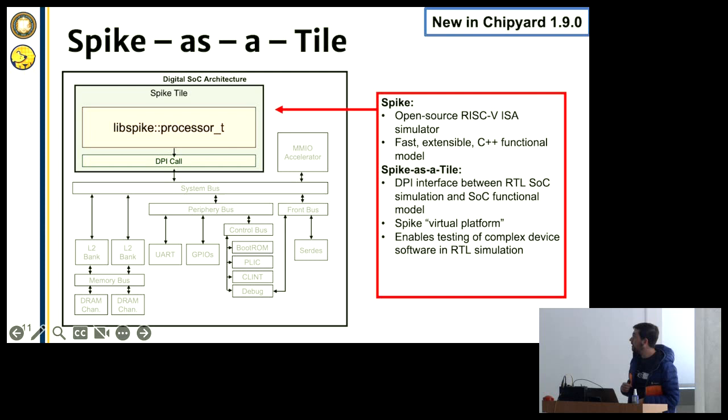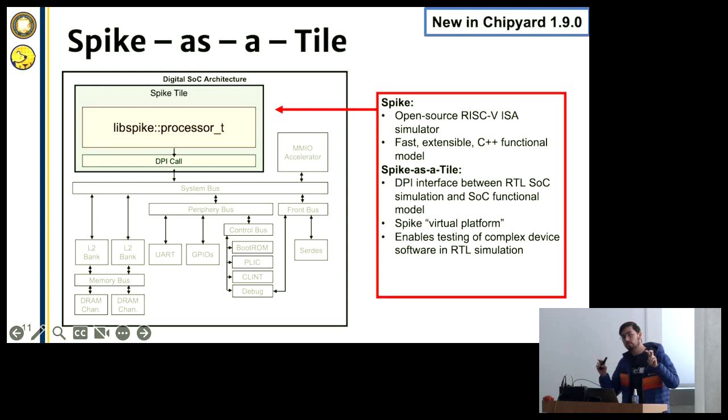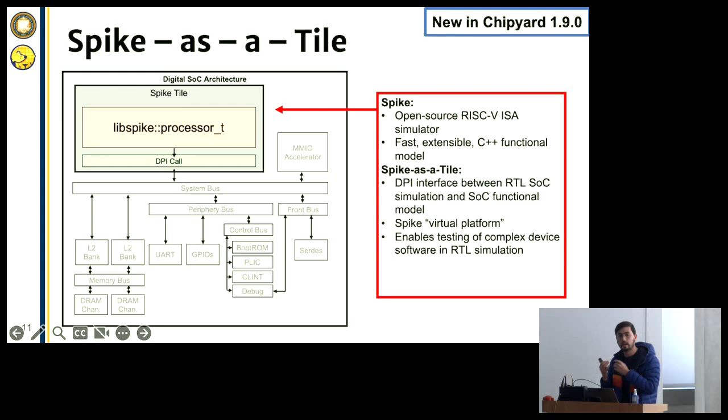For the more verification-focused folks, we have a new feature in the newest version of ChipYard called Spike as a Tile. Spike, if you're not already aware, is our functional model for RISC-V. We're able to plug it into the ChipYard ecosystem so it can serve as a pseudo-CPU, using all the nice back-end features of ChipYard and the rest of the SOC architecture. You can quickly write up your functional model, plug it into Spike, and work with all of ChipYard's peripherals and the rest of the flow. This is a nice new experimental feature.